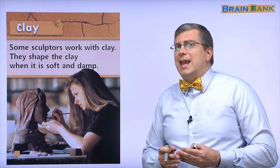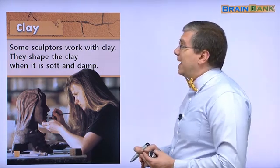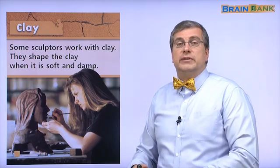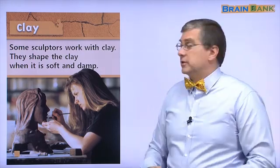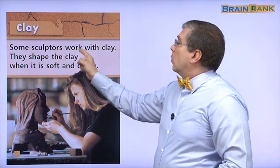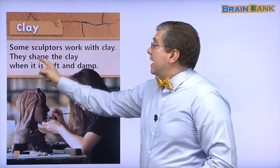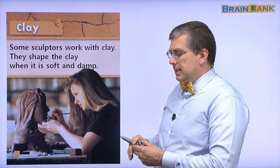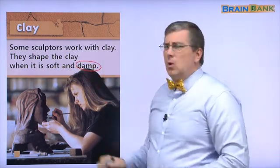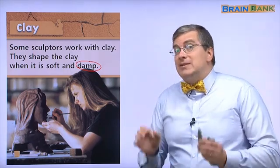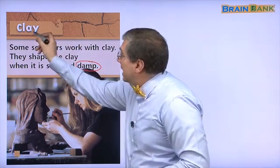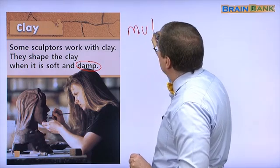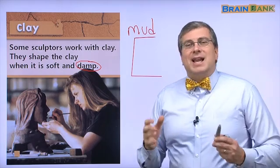Remember, we talked about clay on the cover of the book. Clay is another material sculptors use to make sculptures. Let's read: some sculptors work with clay. They shape the clay when it is soft and damp. What does damp mean? Damp means it has some water in it. Clay is like mud.